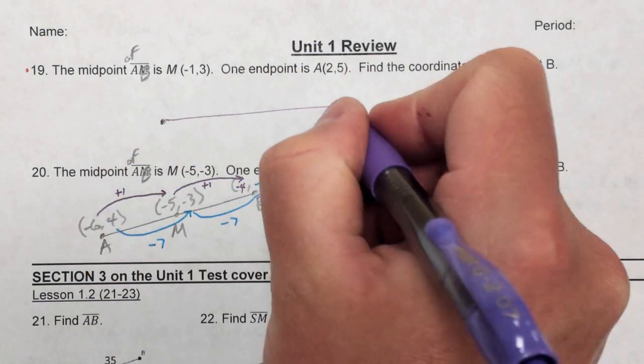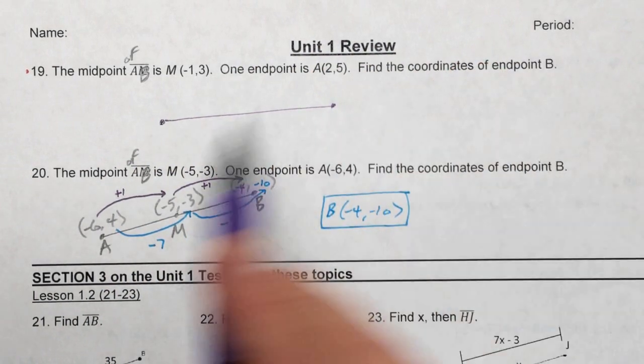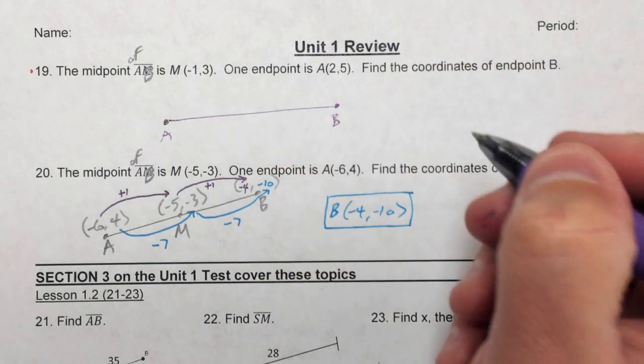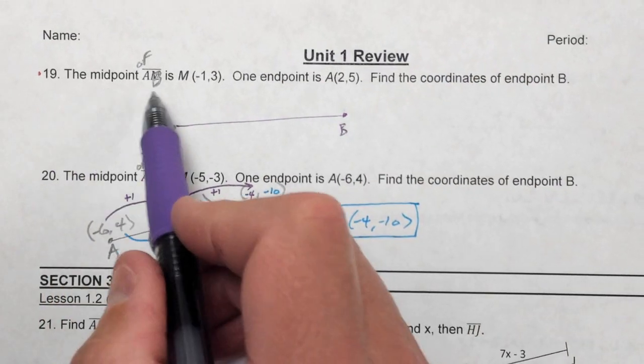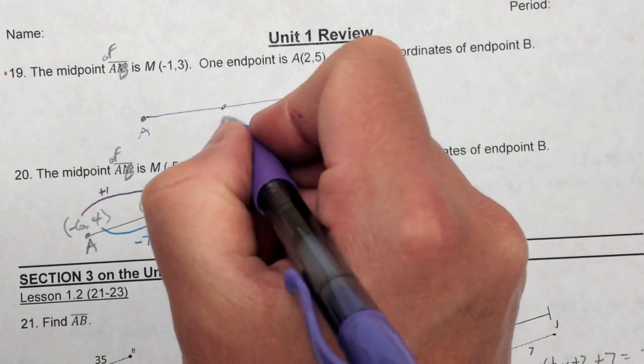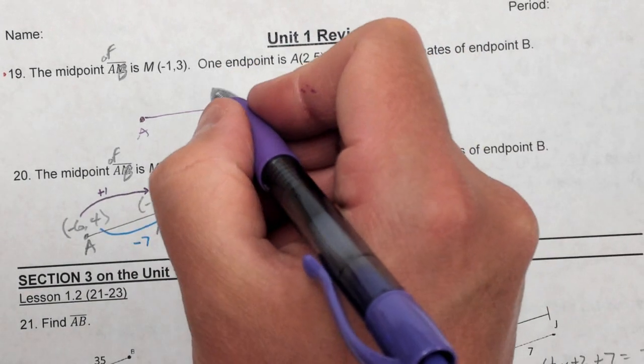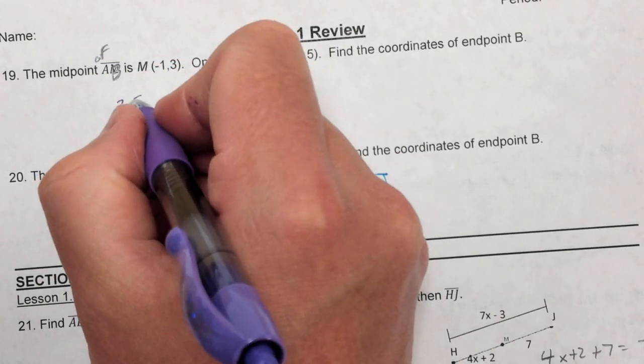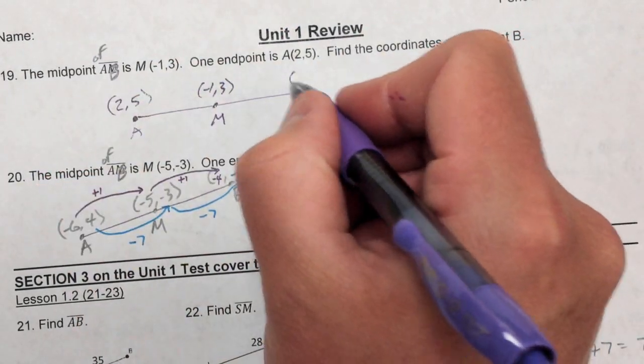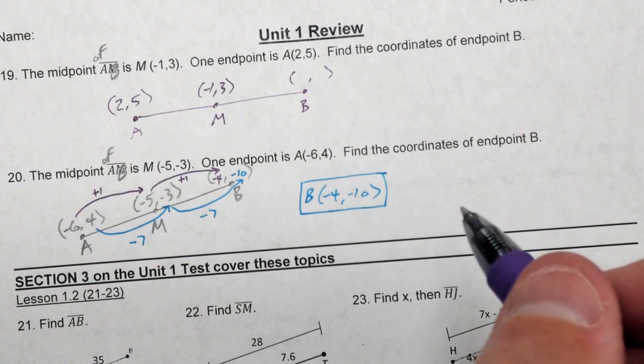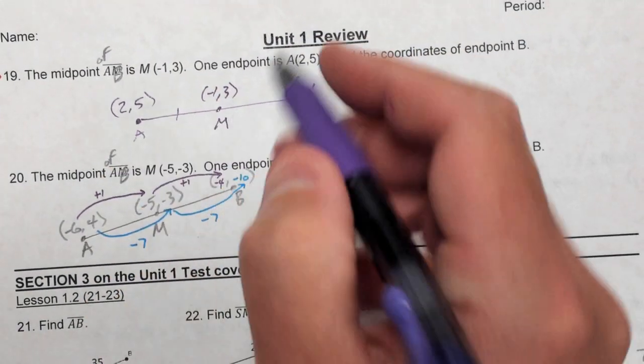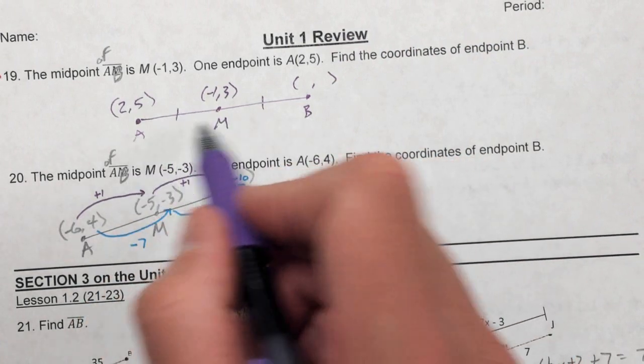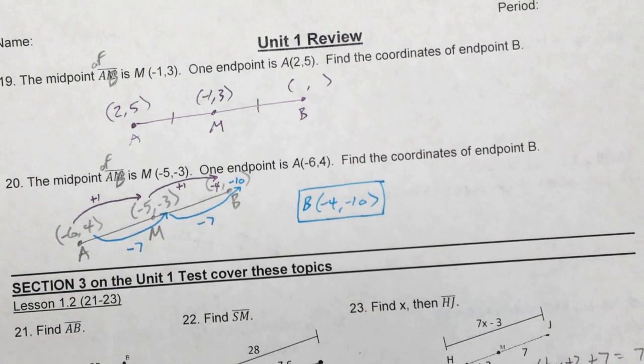So what I like to do is I like to actually draw out the segment that we're talking about. We have segment AB. And it says there's a midpoint of AB is at point M. So I'm going to put an M here. And I'm actually going to label M as negative 1, 3. And they say A is at 2, 5. And my goal is to find the coordinates of the other endpoint. Now since M is a midpoint here I'm going to put a tick mark between A and M and also M and B to indicate that AM is congruent to MB, meaning that they're the same distance apart from each other.